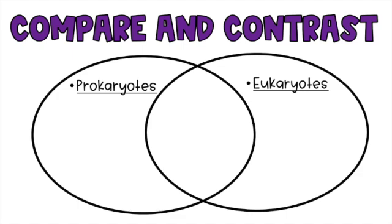We're going to talk about what things they have that are not the same — their differences — and those will go on the two sides. Then in the middle overlapping part, we'll put our similarities: the characteristics that are the same for both. This is a great way to start distinguishing and differentiating the things they have in common and the things that are different for prokaryotes and eukaryotes.